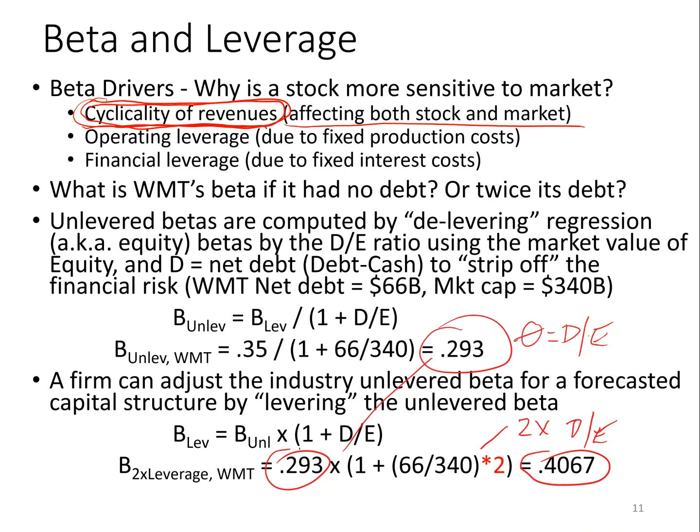Another driver is operating leverage. Firms with a lot of fixed costs in production do really well when sales are booming because much of their production cost is fixed, and operating leverage will affect beta. The last driver is financial leverage. Companies with lots of debt, when times are bad, do even worse because they have fixed debt payments due and may risk bankruptcy. So cyclicality, operating leverage (fixed costs in production), and financial leverage (fixed costs in financing) are all drivers of beta.